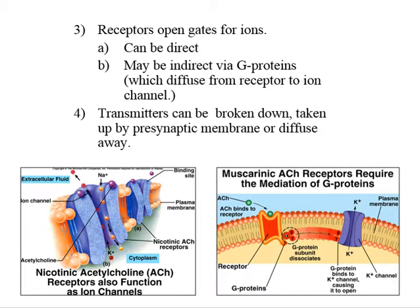Sometimes the transmitter's taken back up by the presynaptic membrane, and sometimes they diffuse away. It also turns out that glial cells — neural glial cells — can pick up the transmitters and remove them.